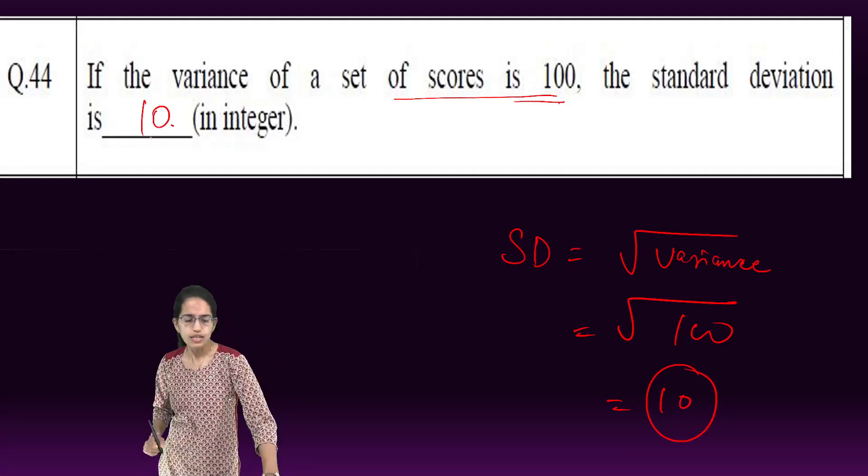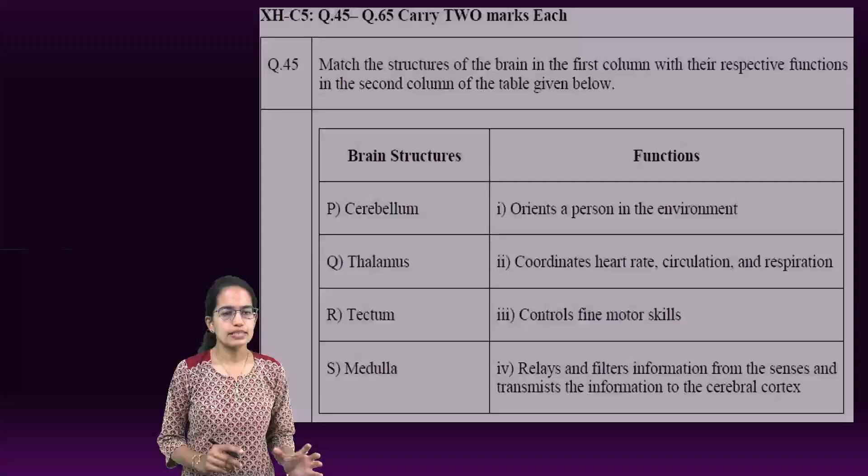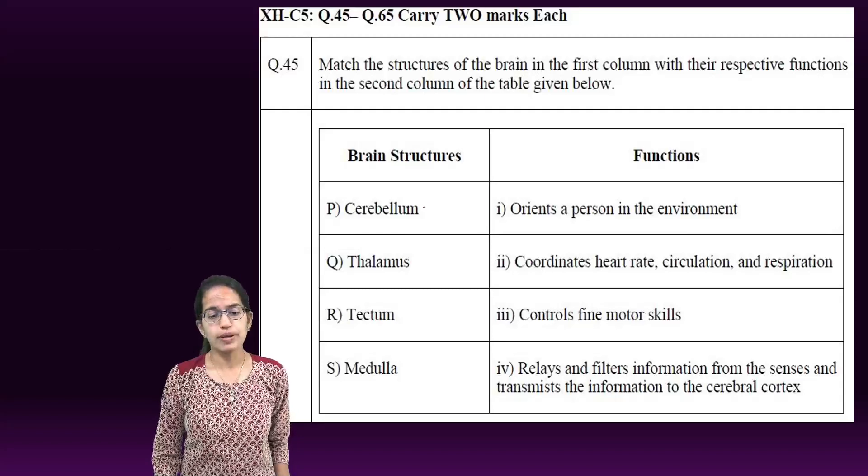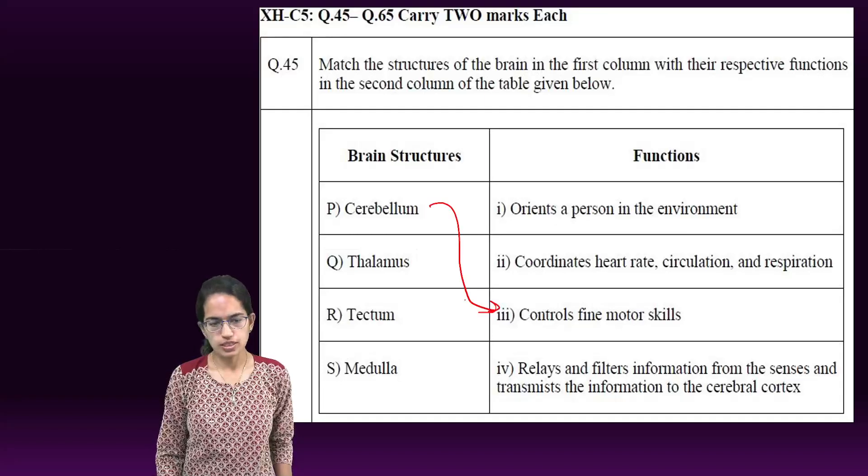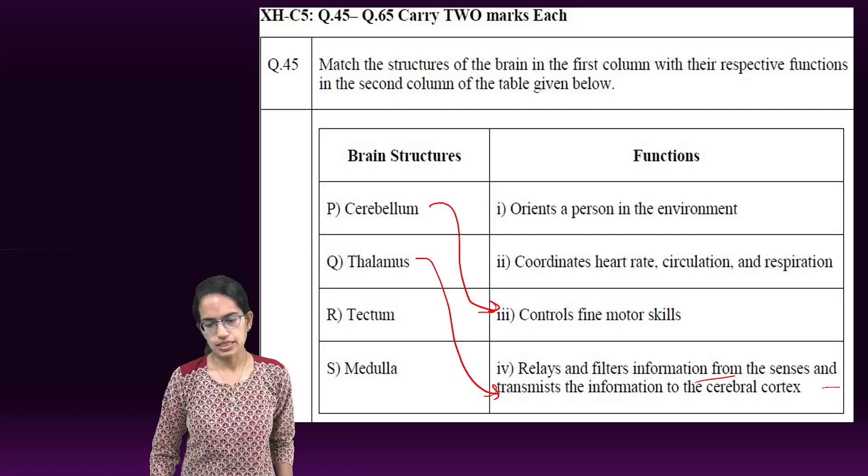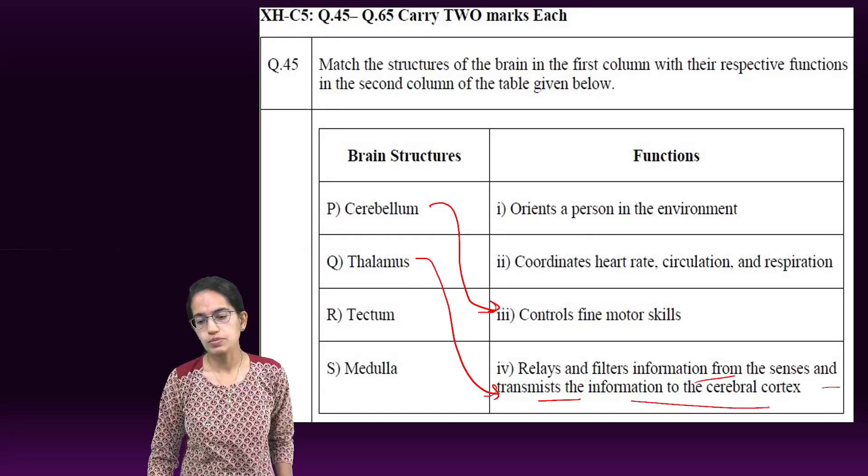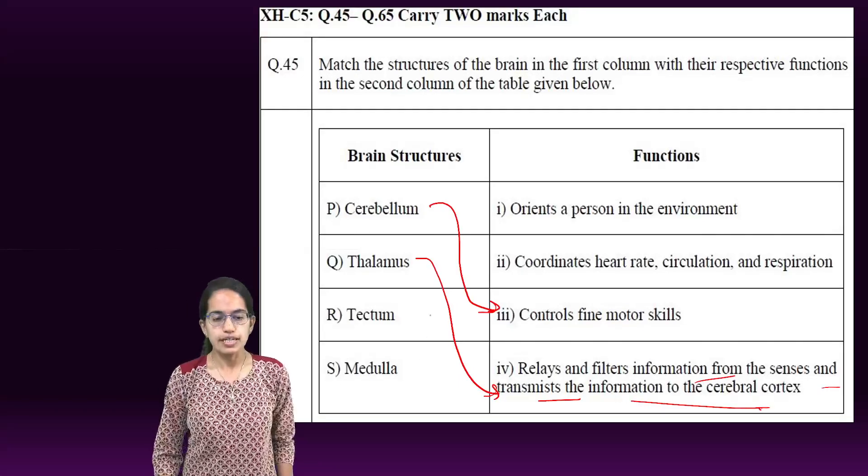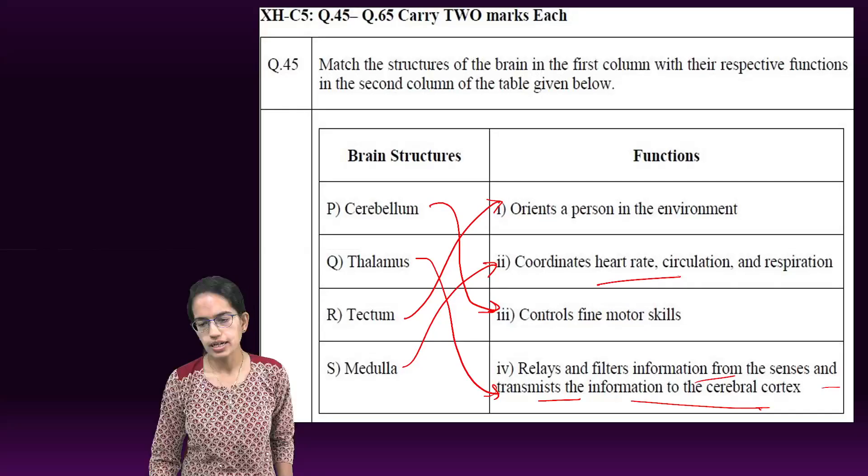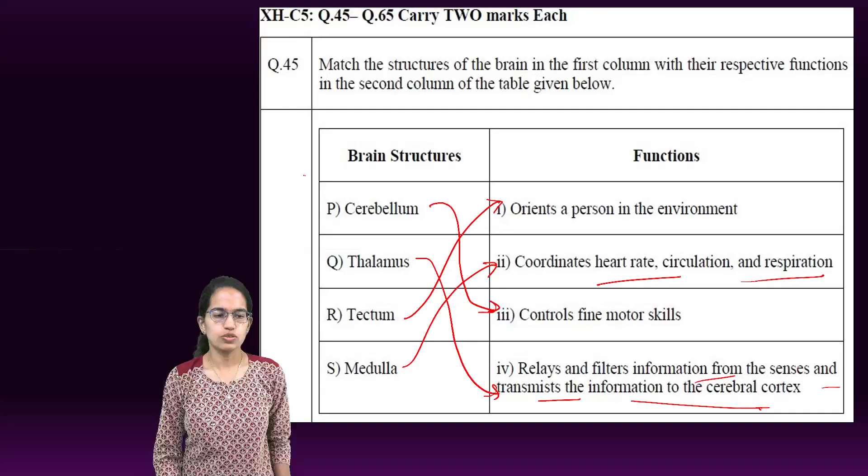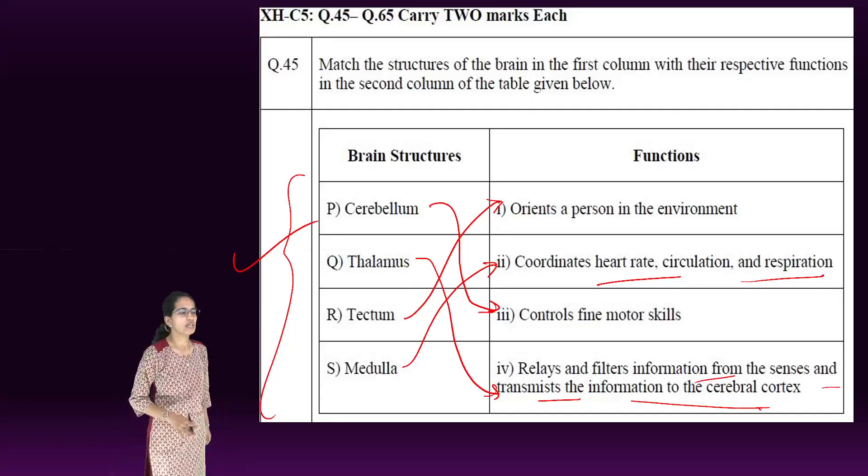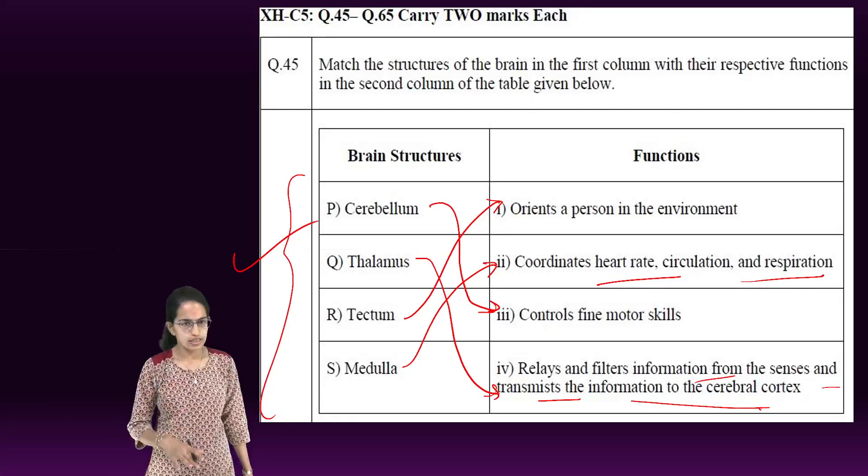Another one here is a match the following question, so you have to match which relates to which. Cerebellum controls your fine motor skills. Thalamus is known as relay function, so it relays and filters information from the senses and transmits it to the cerebral cortex. Tectum orients the person to the environment, and medulla coordinates the heart rate, circulation, and respiration. Again, under the parts of the brain, we have covered this in the biopsychology section, so just refer to the details below.